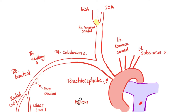The pulmonary trunk gives us the right and left pulmonary arteries, but the aorta gives us the two coronary arteries from the ascending aorta — the right coronary artery and left coronary artery. Then the aorta gives us the brachiocephalic trunk, the left common carotid artery, and the left subclavian artery.